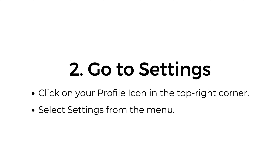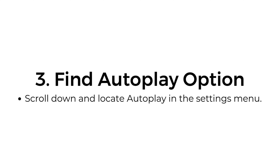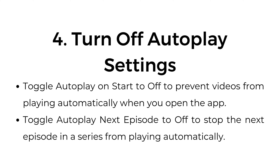Go to settings: click on your profile icon in the top right corner and select Settings from the menu. Find the autoplay option by scrolling down and locating Autoplay in the settings menu. Then turn off autoplay settings: toggle Autoplay on Start to off to prevent videos from playing automatically when you open the app, and toggle Autoplay Next Episode to off to stop the next episode in a series from playing automatically.